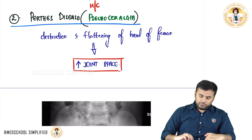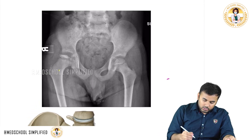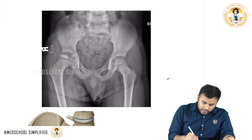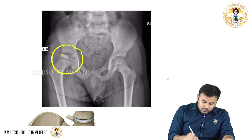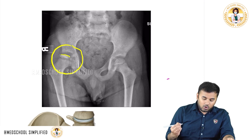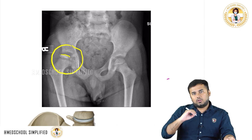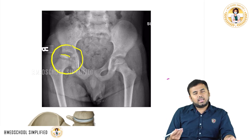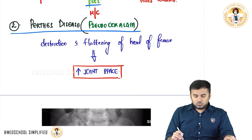On a pelvic x-ray, you can see flattening of the bone — specifically flattening of the head of the femur in the hip region. Because of this flattening, dislocation can occur. Perthes disease is most commonly seen in children. This is what is called Perthes disease.